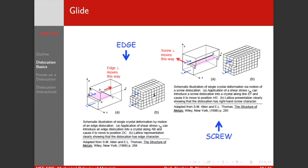We're applying a y-x type shear — pushing this way on the bottom half and this way on the top half. As these bonds break and reform, our dislocation line is going to move this way. The motion of the dislocation obviously has to be perpendicular to the line. For an edge dislocation, the motion is parallel with the Burgers vector.